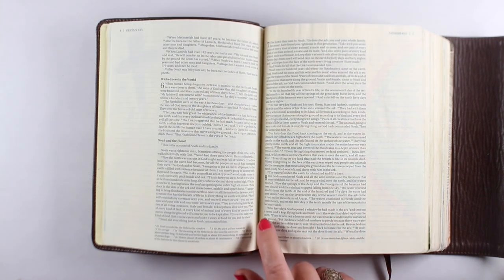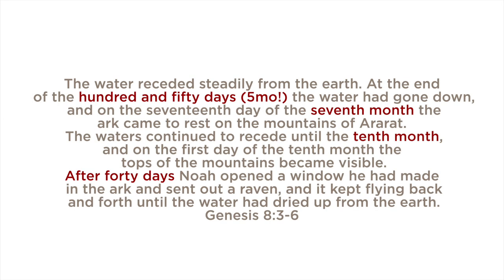My pastor had preached this years ago, and it's just been coming back to my mind from Genesis chapter eight. The water receded steadily from the earth at the end of the hundred and fifty days, that is five months, the water had gone down, and on the seventeenth day of the seventh month, the ark came to rest on the mountains of Ararat. The waters continued to recede until the tenth month, and on the first day of the tenth month, the tops of the mountains became visible.